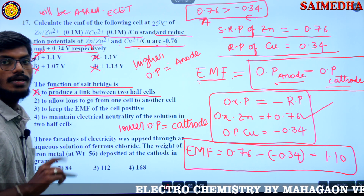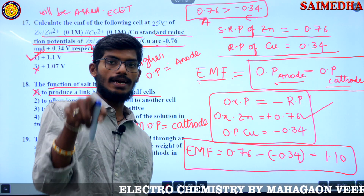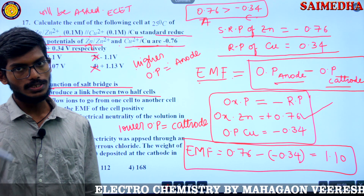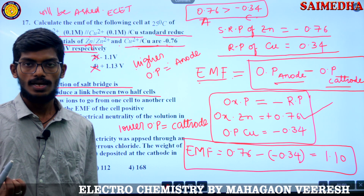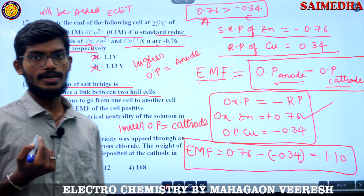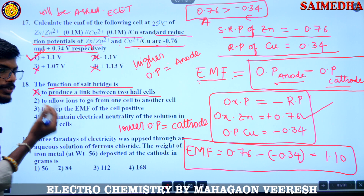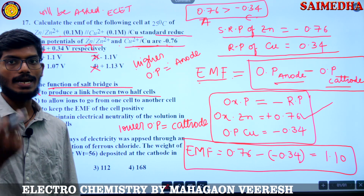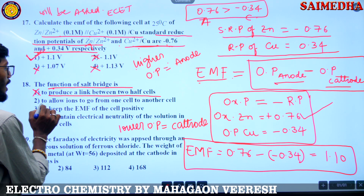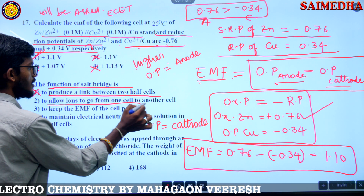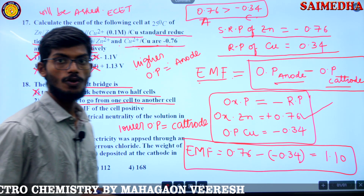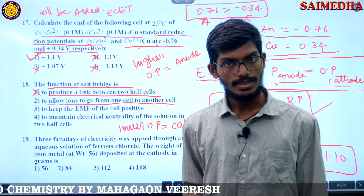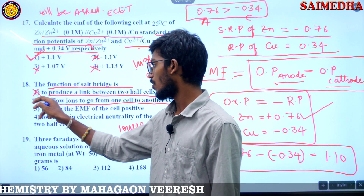Because we already have a wire or battery connecting the two half cells. So the salt bridge is not for that purpose. Another option: to allow ions to go from one cell to another — is that right? No, also wrong.